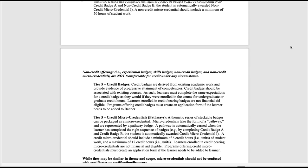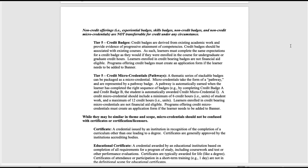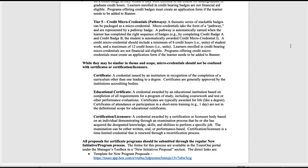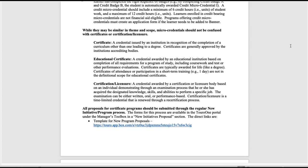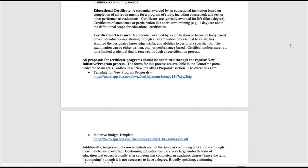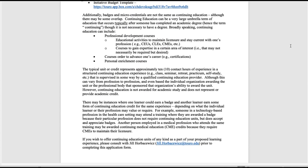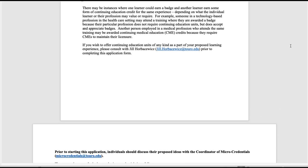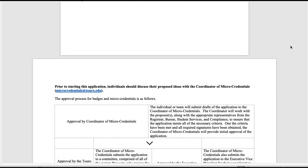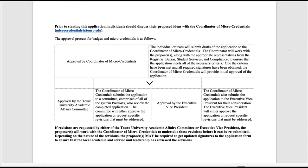Finally, it's useful to determine whether or not what you are proposing needs to be approved by the micro-credential unit, the continuing education unit, or if it is an example of gamification. It is also useful to review the graphic outlining the application process. Once you've completed the application form, you will work with the coordinator of micro-credentials to ensure that you've met all of the required criteria.